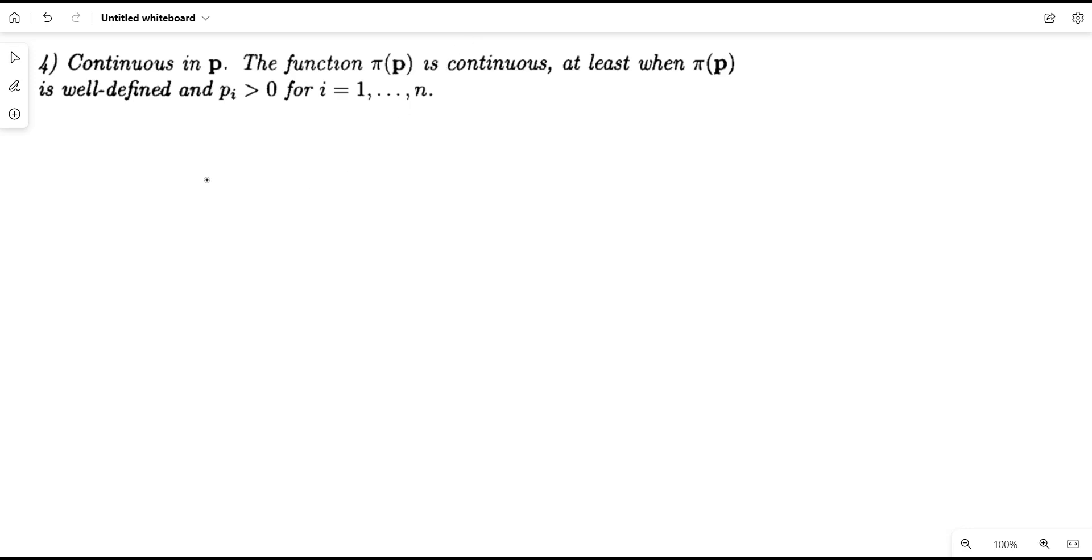Since we know that profit is a function of prices, and prices would either be output price, something like P, or input price, something like W, it means that we can differentiate the profit function and the profit function is continuous in P.